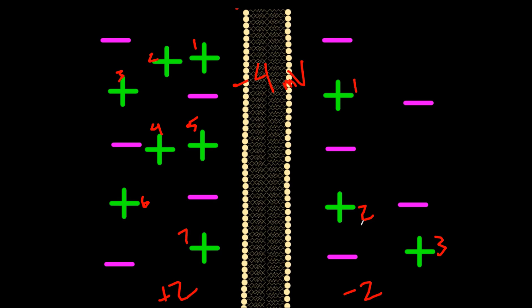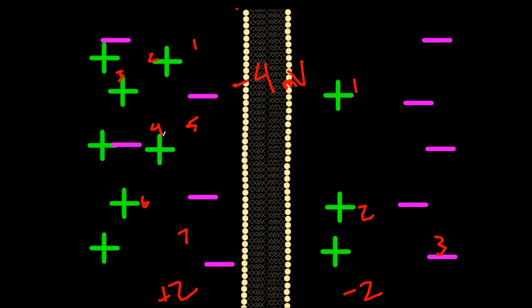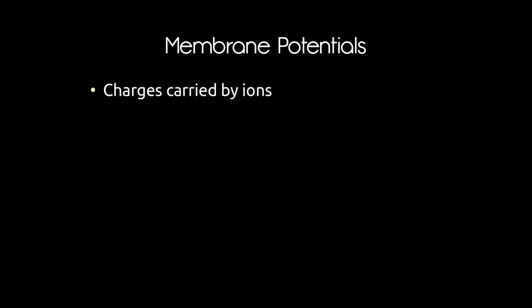When looking at membrane potential, the charges are unequal between the inside and outside of the membrane. Most excess charges aggregate along the cell membrane itself, which means most of the extracellular and intracellular fluid is actually electrically neutral. Almost all of these charges are carried by specific ions when we're talking about cells.